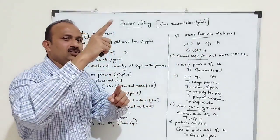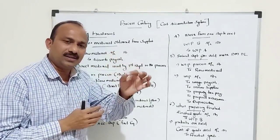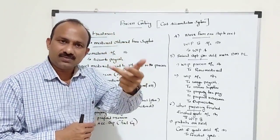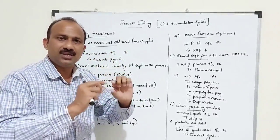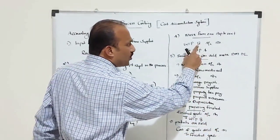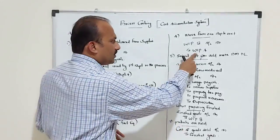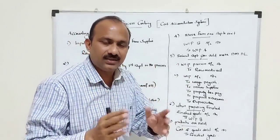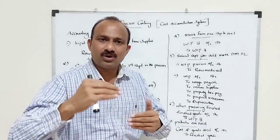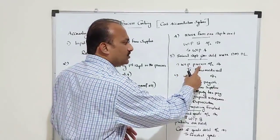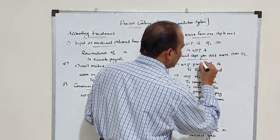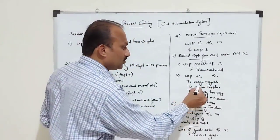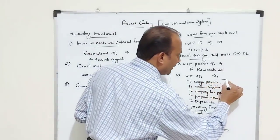Then it moves from Department A to Department B — material was purchased, then it became work in progress, then conversion cost was added, and now the first production process is complete. You are transferring to the next process: Work in Process of Department B. Now in the second department, if you need more material or more conversion cost you can add them. Work in Process Account B is debited for raw material added, and conversion costs such as wages payable are added as well.